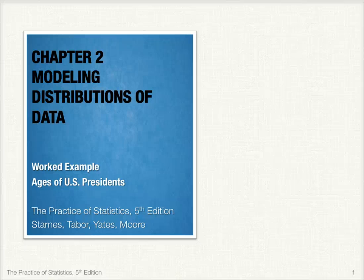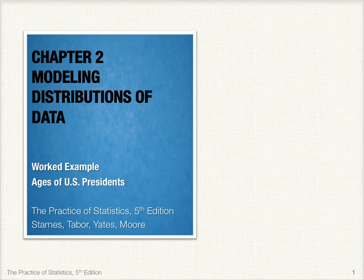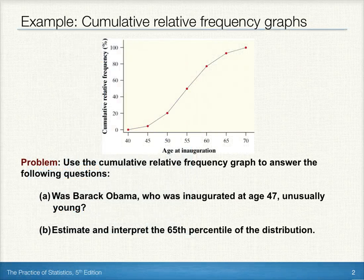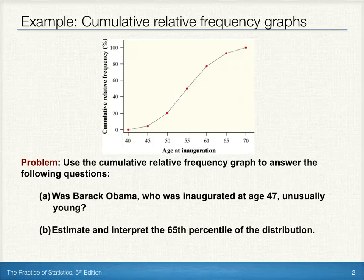Hi, this is Jason Molesky. In this example, we'll look at interpreting Cumulative Relative Frequency Graphs, or OGIFs. This cumulative relative frequency graph displays the age at inauguration for all U.S. presidents. Let's use this graph to answer the following questions.